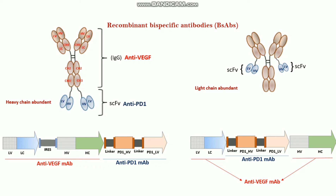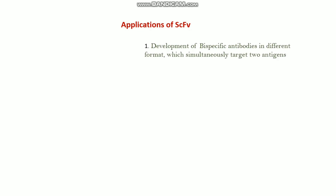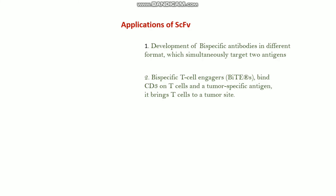This is how we can make the plasmid for the bispecific antibody. There are different applications of ScFb. First is the development of bispecific antibodies in different formats that simultaneously target two different antigens. Second, there are bispecific T-cell engagers, like CD3 or PD-1, that bind with specific T-cell antigens. Also, this kind of bispecific antibody can bind with tumor-specific antigens.